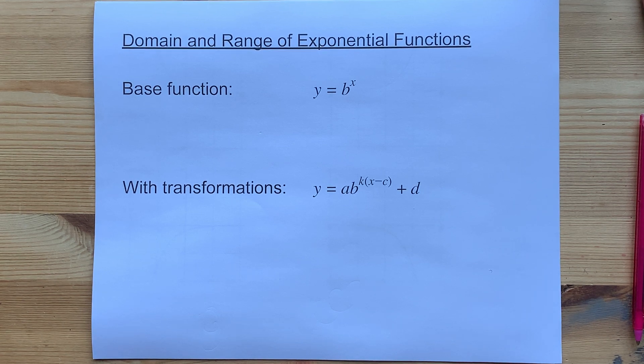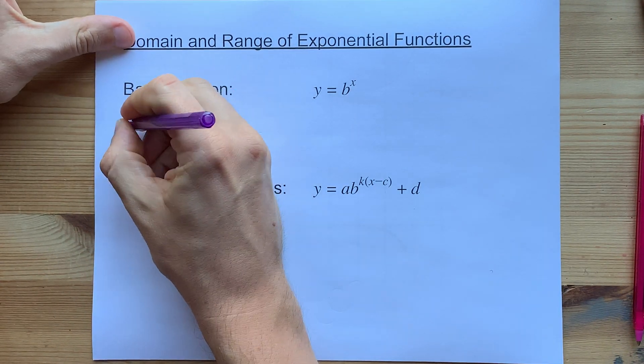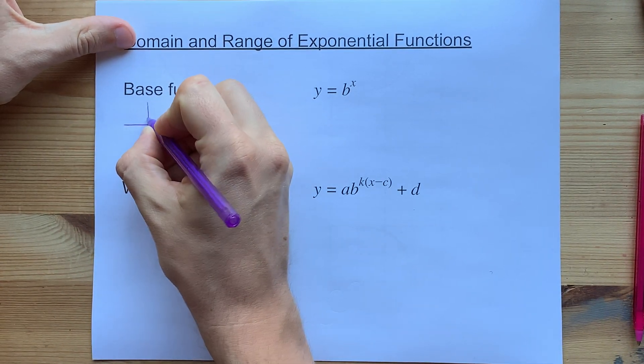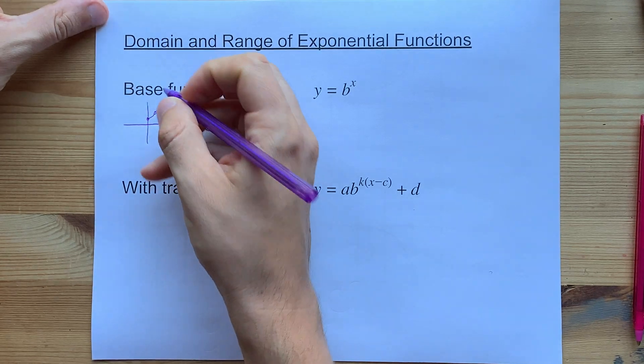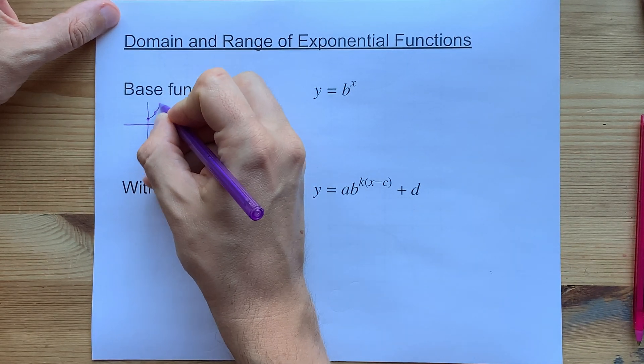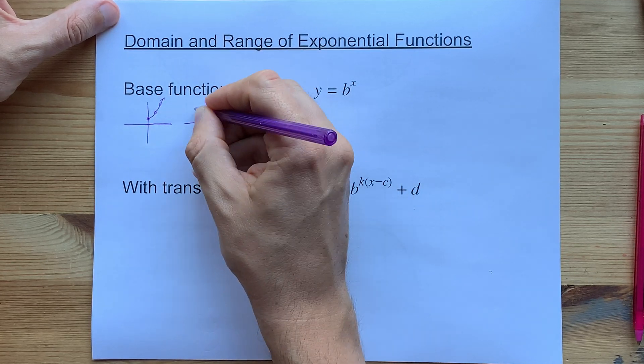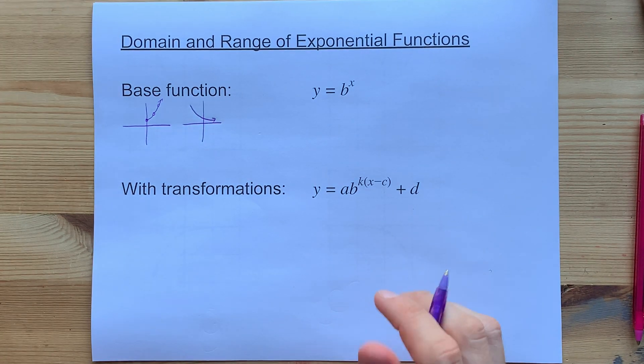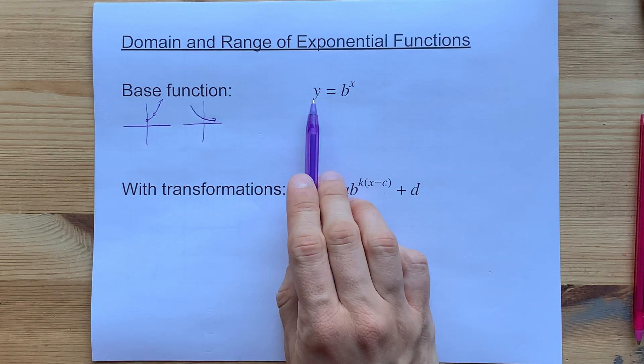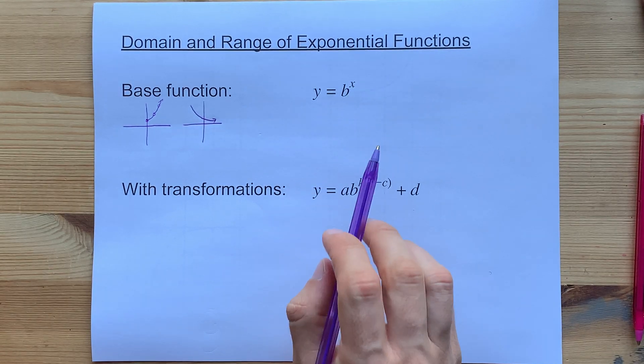Let's talk about the domain and range of exponential functions. Exponential functions are ones where each x value is multiplied by something else to get the next value. So you can end up with exponential growth, or if you're multiplying by a decimal or a small fraction, you can end up with exponential decay as well. All of these equations are going to be y equals, and then there's going to be a number to the power of x.